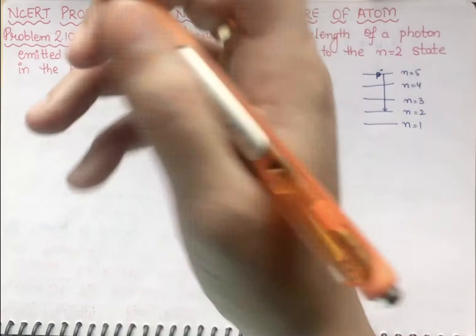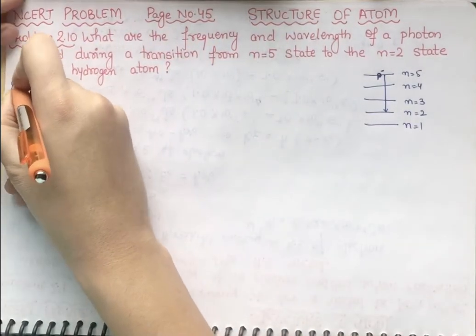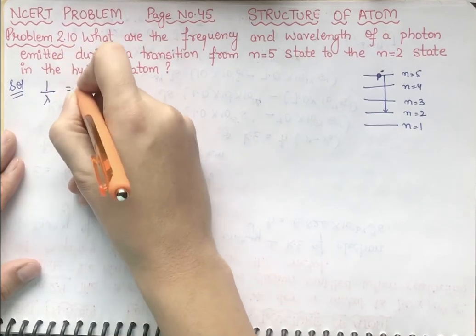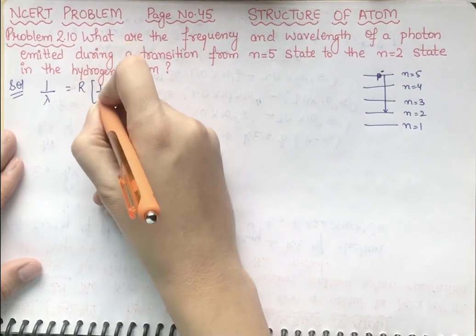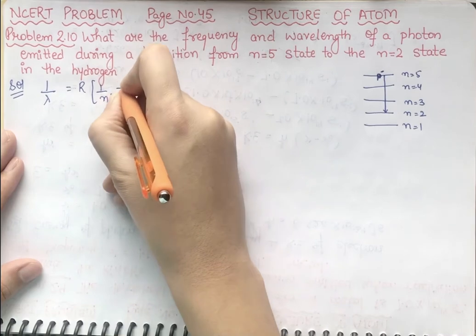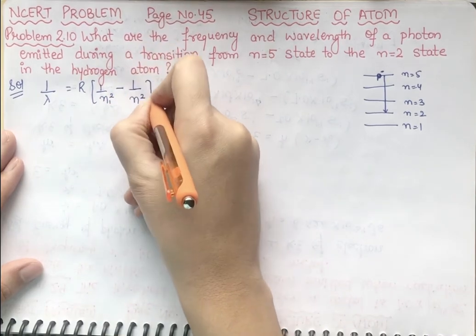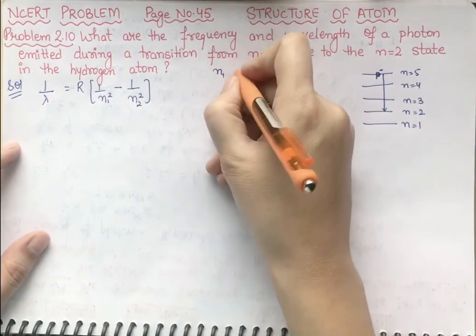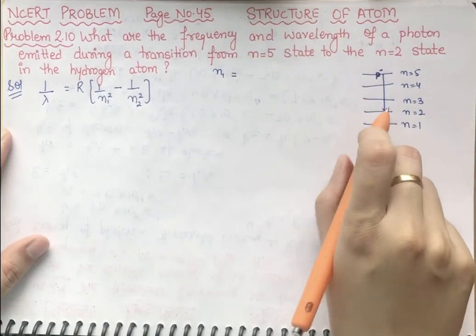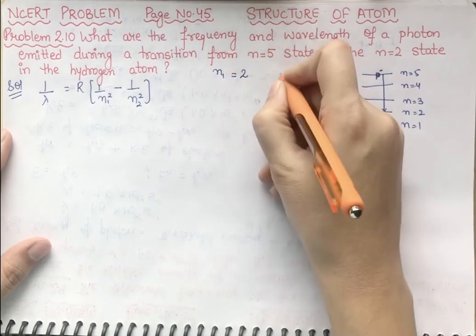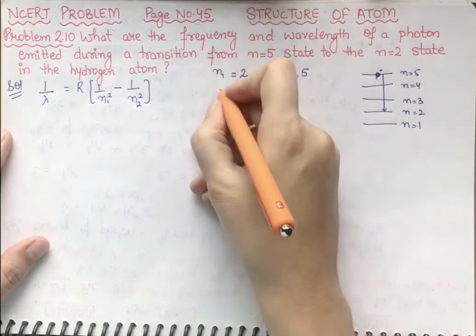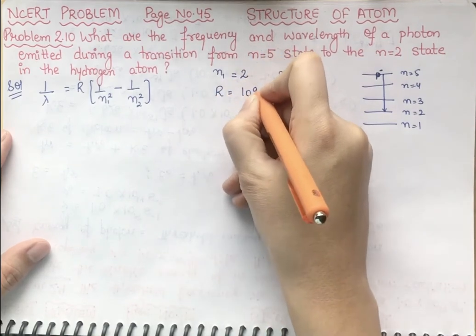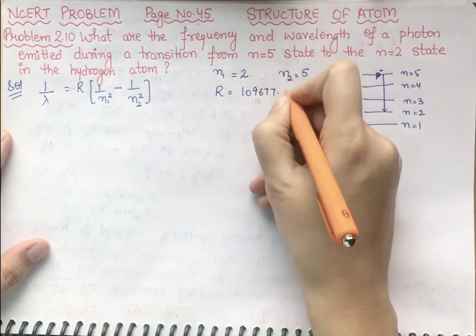We know that in that case, we will use Rydberg's equation. Rydberg's equation is: 1 by lambda equal to R times (1 by n1 squared minus 1 by n2 squared). Here, n1 is the orbit having the least value, so n1 equal to 2 and n2 equal to 5.